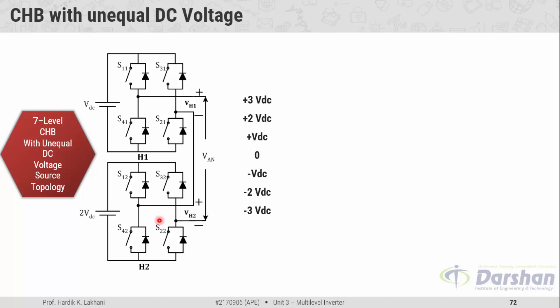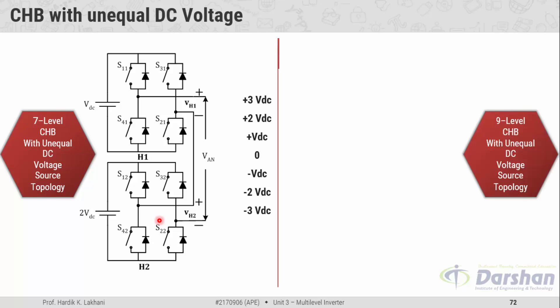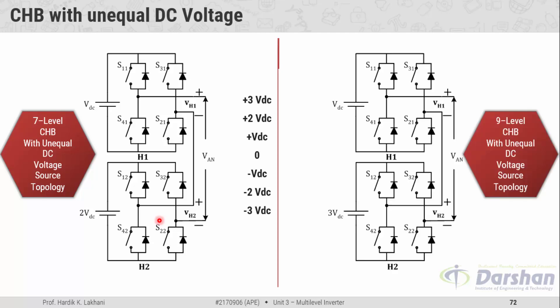For the nine-level CHB with unequal DC voltage: in the previous slide, we saw that nine-level CHB with equal DC voltage needs four cells H1 to H4. But when we use the unequal DC voltage concept, the nine-level CHB inverter can be constructed with only two cells, and these nine levels can be produced with this construction.